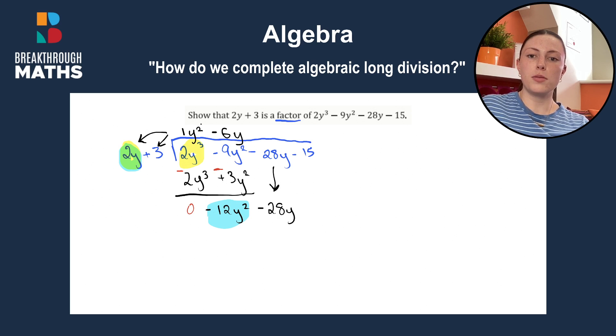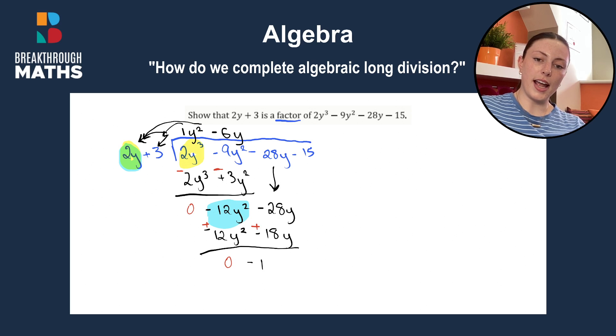We go back and do what we did again and multiply by the 2y first and then by the 3. So minus 6 by 2 is minus 12, y by y is y squared. Then plus 3 by minus 6y is minus 18y. Again, we draw our line under and we change our signs. So it changes to a plus and a plus. Minus 12y squared plus 12y squared gives us 0. And then minus 28y plus 18y gives us minus 10y. And we bring down our final term because we want to be dealing with two terms at all times.